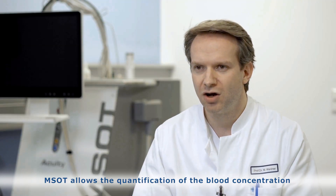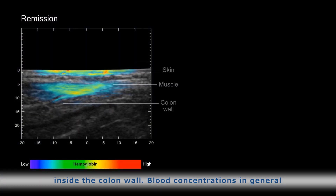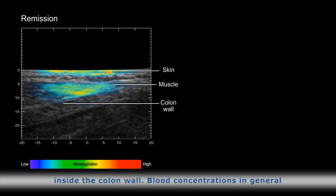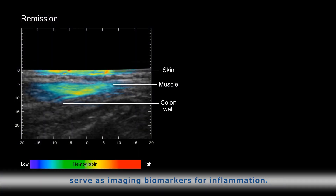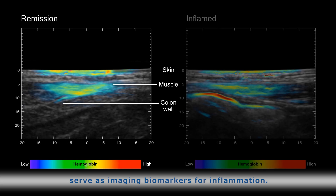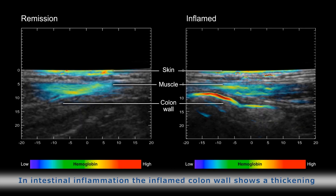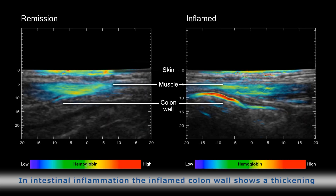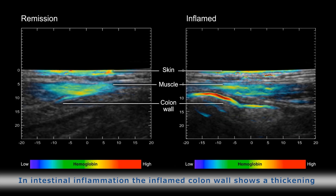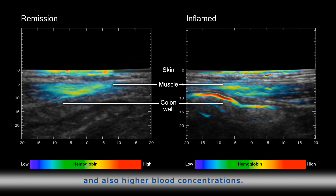MSOT allows the quantification of the blood concentration inside the colon wall. Blood concentrations in general serve as imaging biomarkers for inflammation. In intestinal inflammation, the inflamed colon wall shows a thickening and also higher blood concentrations.